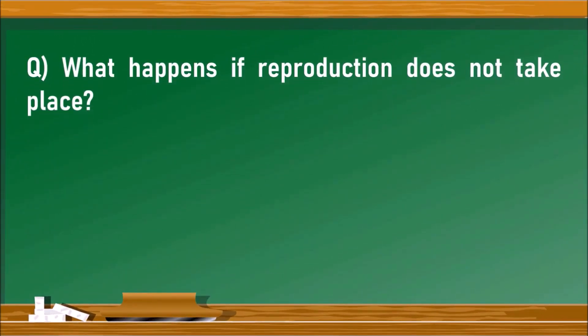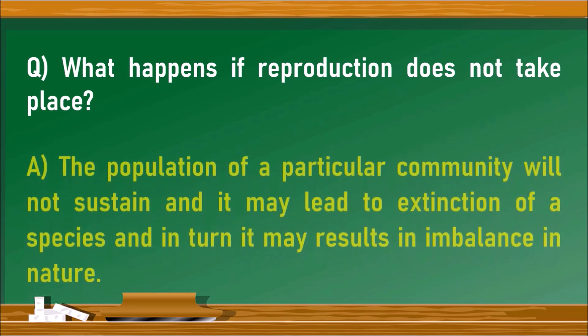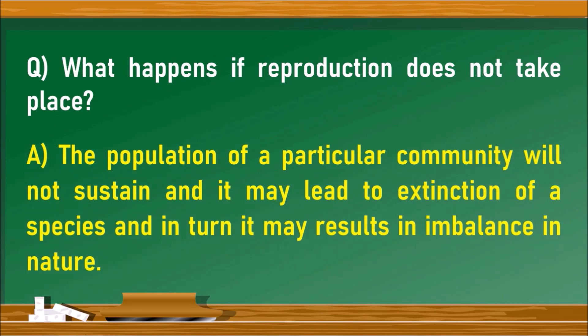Next question: what happens if reproduction does not take place at all in living organisms? The population of the particular community will not sustain, and it may lead to the extinction of the species, resulting in some imbalance in nature. If reproduction does not take place, new generations will not be produced and the population will be eliminated from the earth.